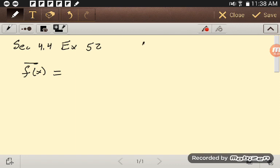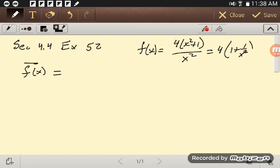Over here we're told f of x is equal to 4 times x squared plus 1 over x squared. Now I notice that that is 4 times 1 plus 1 over x squared, that's another way to look at it. And they're interested in the average value on 1, 3.